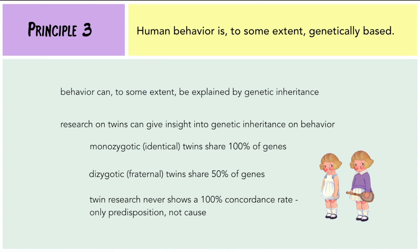Principle 3 states that human behavior is, to some extent, genetically based — meaning we were born with certain traits. Research on twins or family studies can provide insight into the genetic elements that lead to behaviors such as personality, intelligence, or mental disorders such as depression or schizophrenia. Twin studies are useful because monozygotic twins share 100% of genes and dizygotic twins share 50% of genes, which can show the extent to which the environment or genetics affects behavior. However, twin research never shows a 100% concordance rate, which means that even though monozygotic twins share 100% of genes, environmental factors do play a role — so genetics is only a predisposition, not a cause.